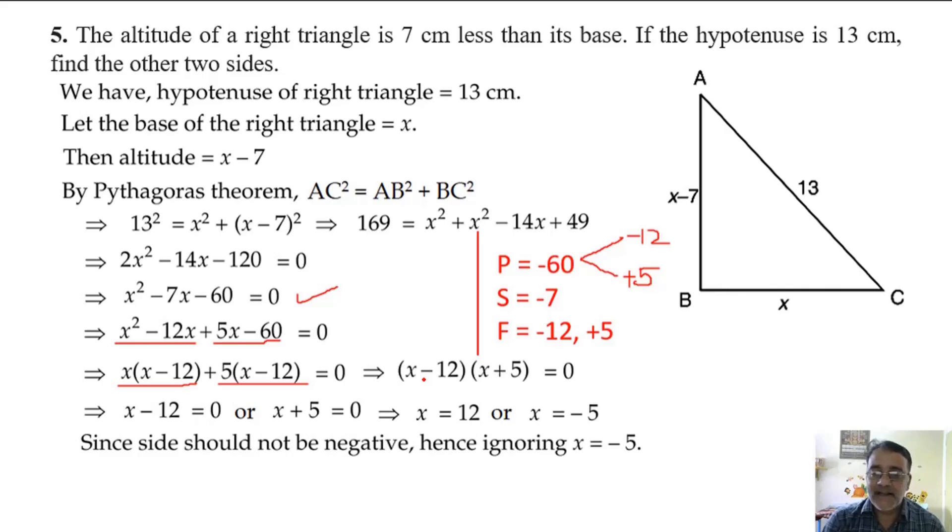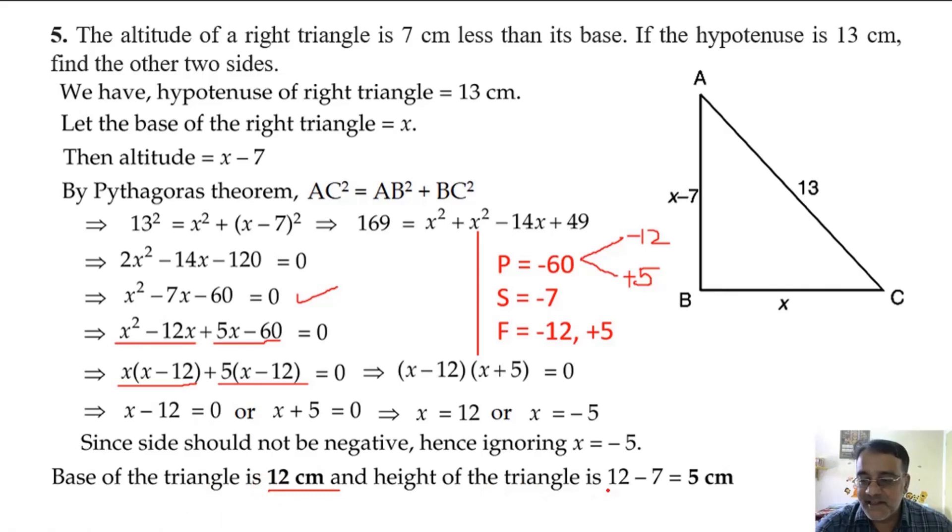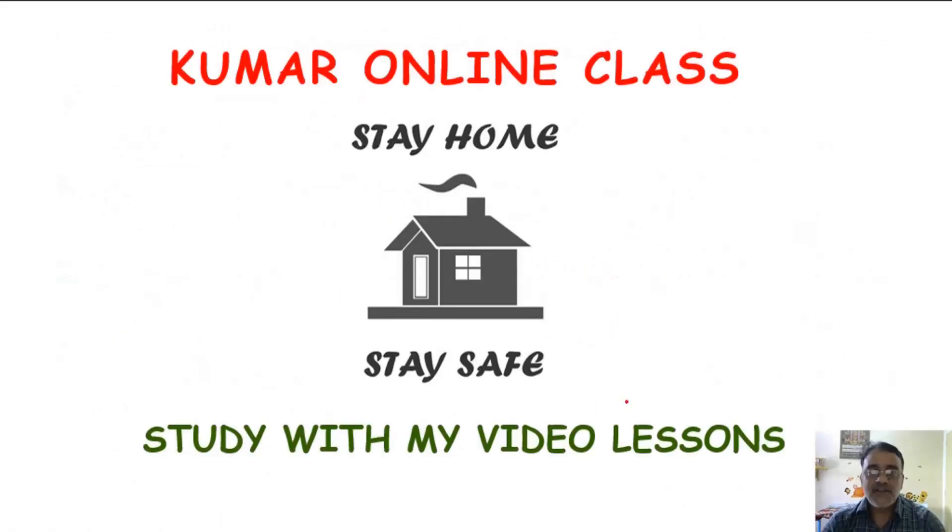Since side should not be negative, we are rejecting x equals minus 5. We get x equals 12. So base of the triangle is 12 cm and height of the triangle is 12 minus 7, which is 5 cm. That's all for today's session. Thank you.